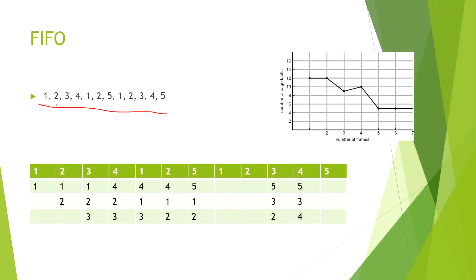In the FIFO page algorithm, let's consider one more example with a new reference string and a three-frame physical memory. The process will demand one and it's not there, so it stores one; then two and three in the same way. When four comes, it replaces one, which came first in the sequence — so frames become 4, 2, 3. Then one replaces two as it came first. Deploying the algorithm, we get three page hits.